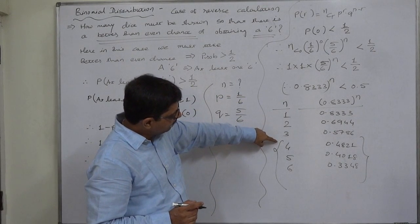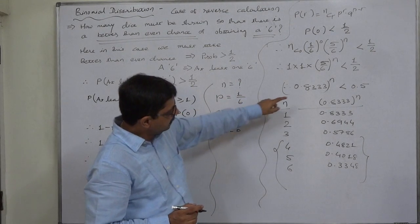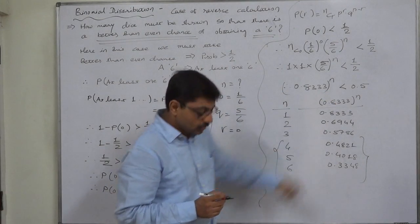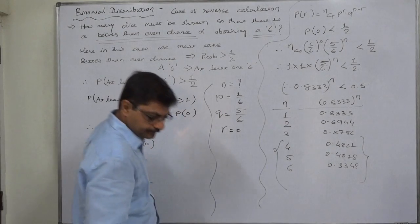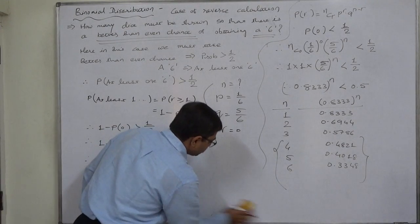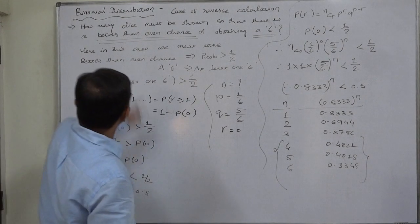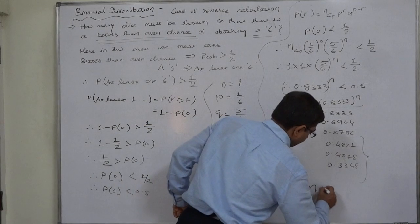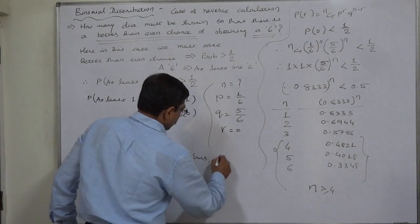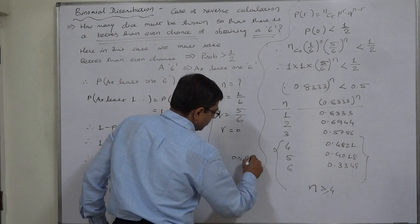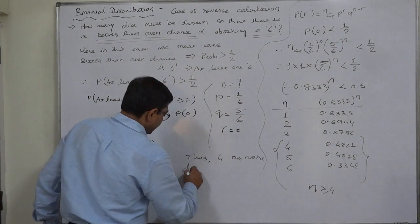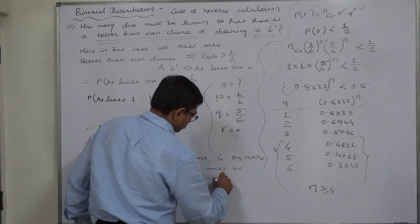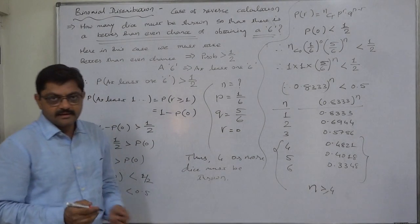For all values of N equal to 4 or more, 0.8333^n is less than 0.5. So we can say that 4 or more dice must be thrown. Thus the answer is N ≥ 4 dice must be thrown. That's it. Thank you.